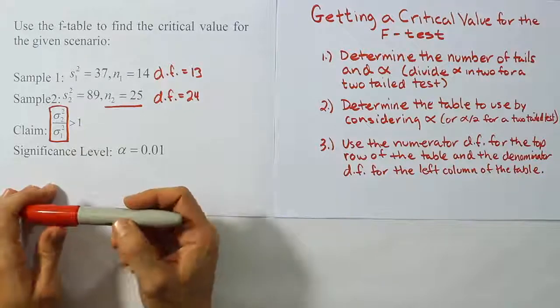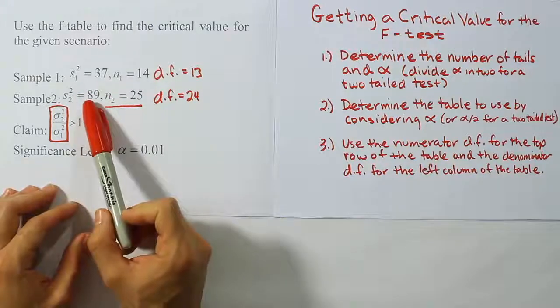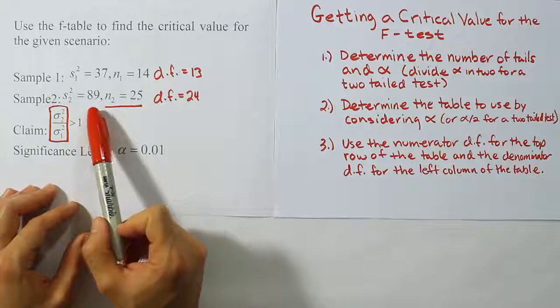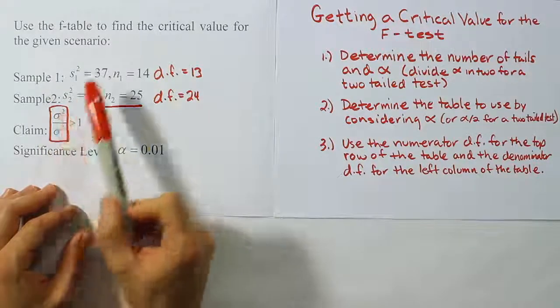It's just how our tables are set up in the back of the books. So because of that, we make sure that when we set up our test statistic, we put the larger sample variance on top. So because of that, if the larger sample variance is from sample two, they will go ahead and make that your numerator. And then for the denominator, it will be the other sample.